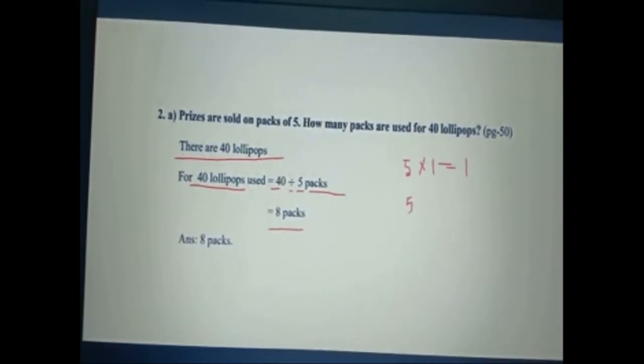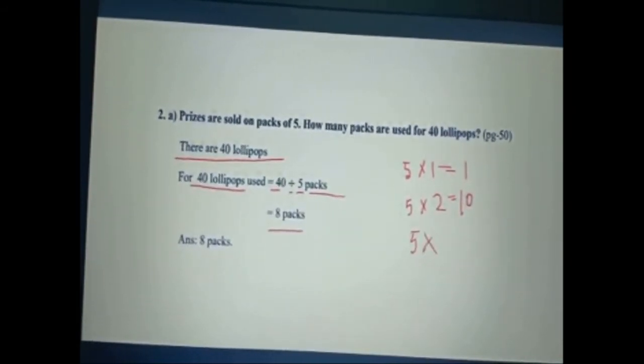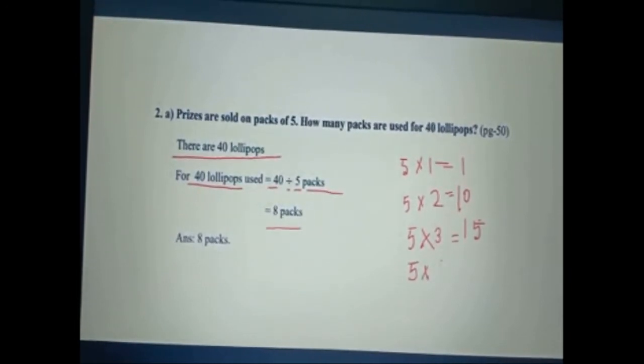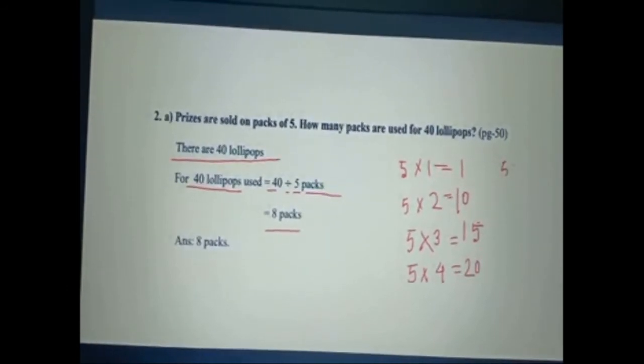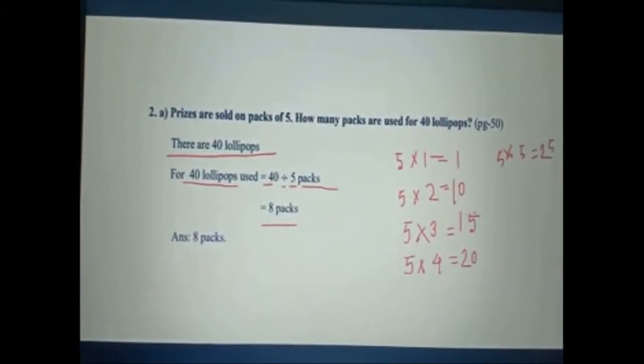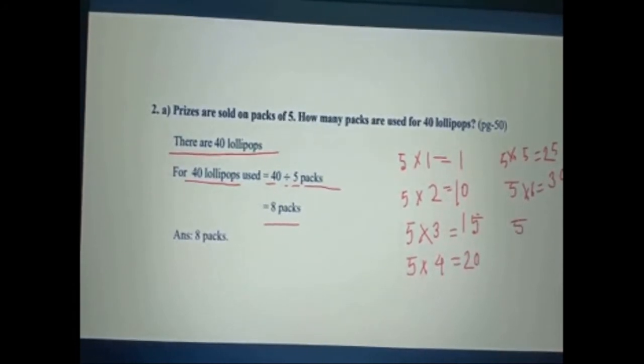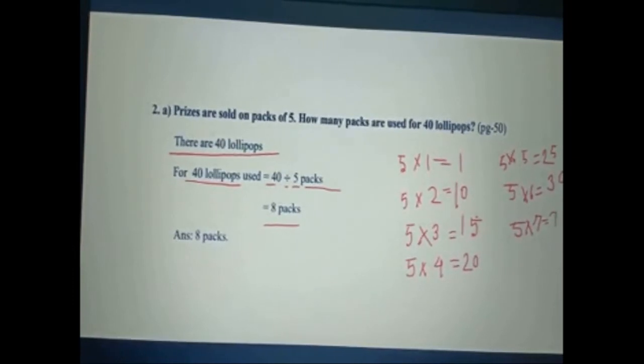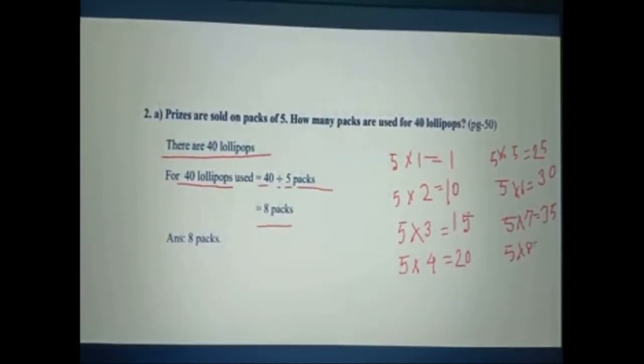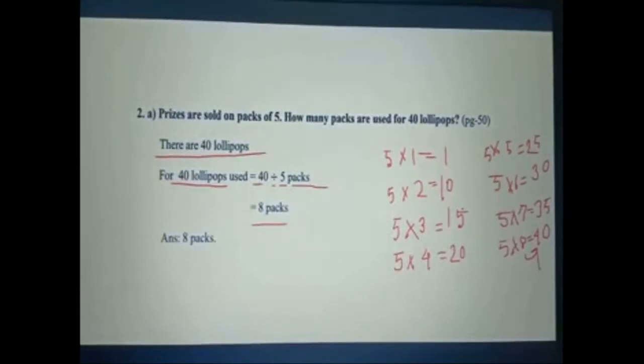If we read the multiplication table, we can see 5 goes 8 times to 40. 5 ones are 5, 5 twos are 10, 5 threes are 15, 5 fours are 20, 5 fives are 25, 5 sixes are 30, 5 sevens are 35, and 5 eights are 40. You can see 5 goes 8 times to 40. So the answer will be 8 packs.